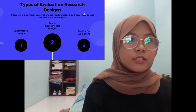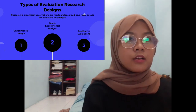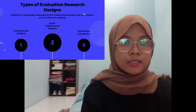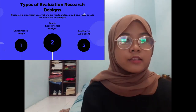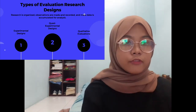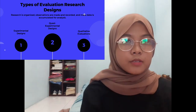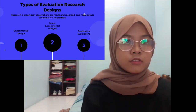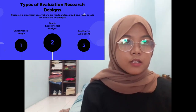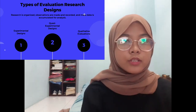Types of evaluation research design: Research is organized, observations are made and recorded, and mass data is accumulated for analysis. The three types are: one, experimental design; two, quasi-experimental designs; and three, qualitative evaluation. Evaluation research itself is not a method but rather an application of social research methods, and it can involve one of several research designs.